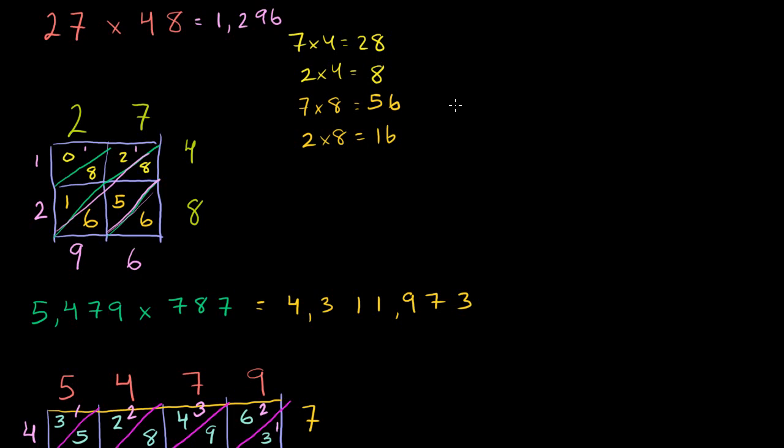And to see why it worked, I'm going to redo this problem up here. So when we multiplied 27, you write your 2 and your 7 just like that, times 48. I'm just doing exactly what we did in the previous video. We drew a lattice, gave the 2 a column and the 7 a column. We gave the 4 a row and we gave the 8 a row. And then we drew our diagonals.